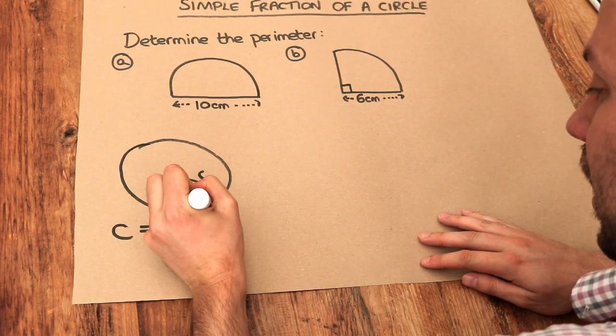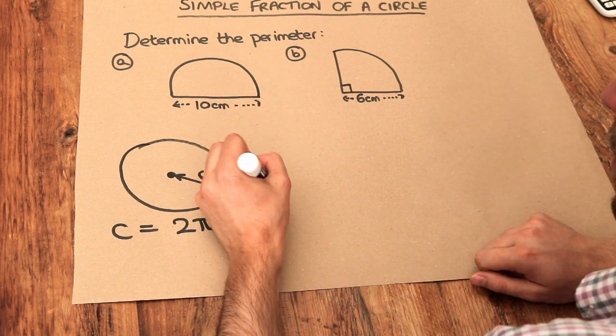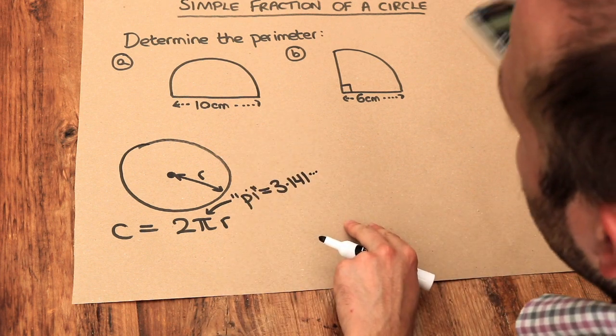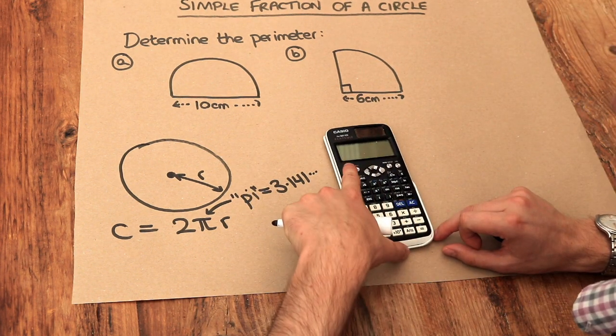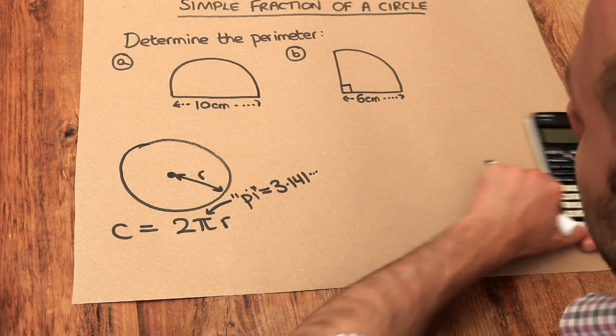And remember this is the Greek letter pi, and that's just a number. Pi has the value 3.141 and the digits go on forever, but we can get pi now calculated by using shift and then this golden pi here. Or it might be different depending on what calculator you have.